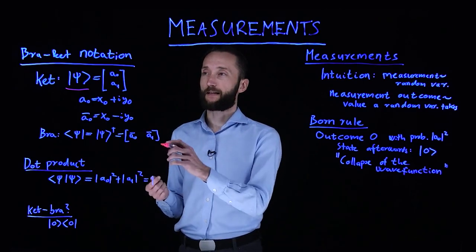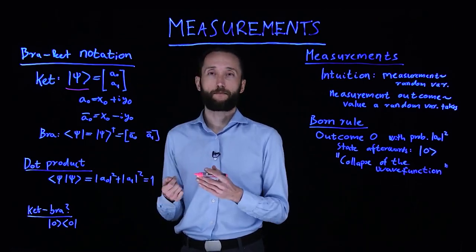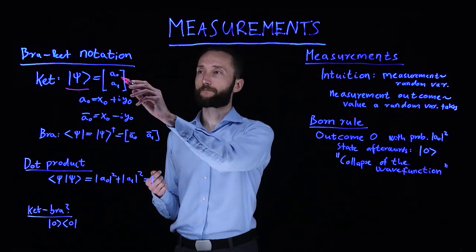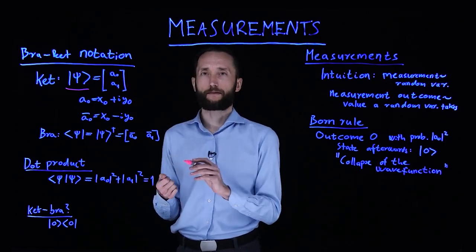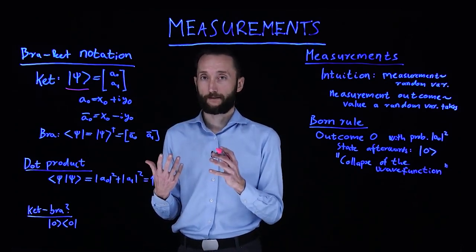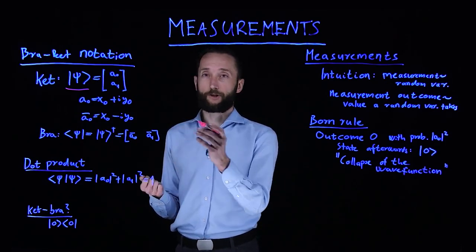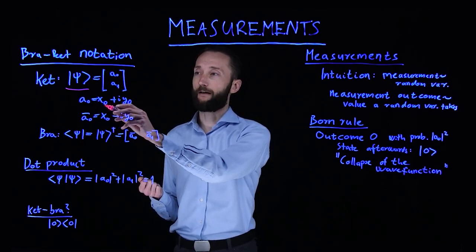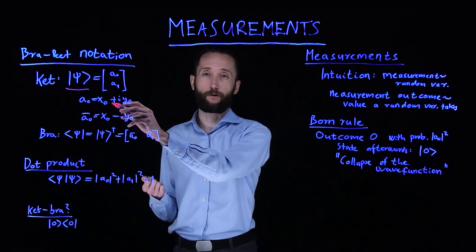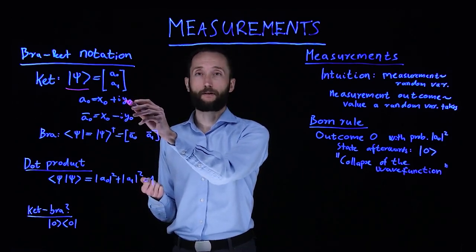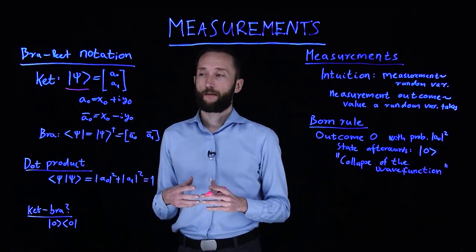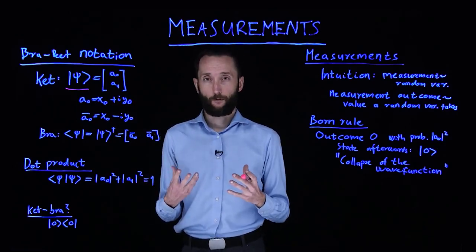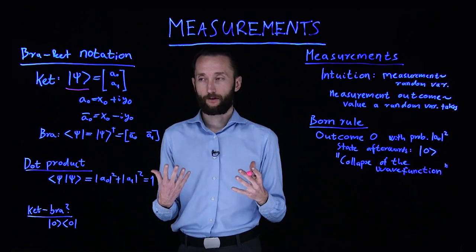In the simplest case, this is a two-level system, a qubit, so it can take a vector of two elements and both elements are complex. Now a complex number in general is written in this form. For instance, a_0 equals x_0, which is a real number, plus the imaginary number times y_0. There is something we can do with complex numbers that we cannot do with real numbers - we can take the conjugate.